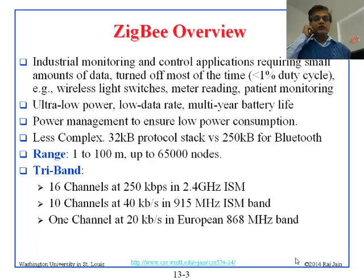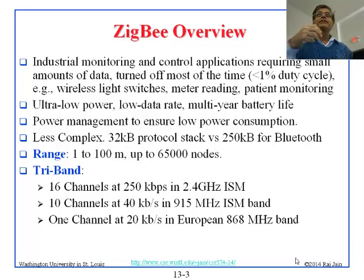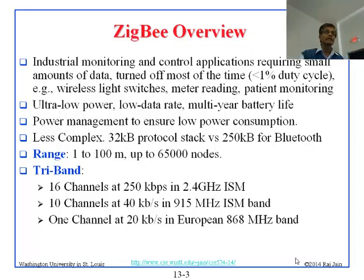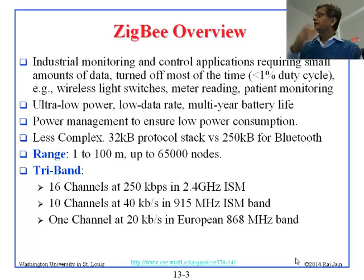Range goes up to 1 to 100 meters and up to 65,000 nodes. This is one place where they are clearly different from Bluetooth. Bluetooth assigns only 3-bit and 6-bit numbers, while Zigbee assigns 16-bit numbers. So you can have up to 2 raised to 16 devices in a single network — approximately 65,000, which is 2 to the 16 minus 1.